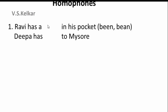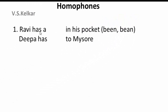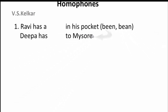When you come back to the example, 'Ravi has a dash in his pocket' — using 'been' here is not suitable. We have to use 'bean.' Using 'bean' makes the sentence meaningful. If we use 'been,' it gives no sense and the sentence is grammatically wrong. For the other sentence, 'Deepa has dash to Mysore,' using 'been' is correct because it indicates past tense.